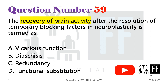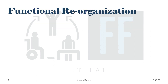Now we will talk about every option in brief. If we look at the mechanisms of neuroplasticity, there are mainly two: first is neuronal regeneration or collateral sprouting, and the second one is functional reorganization.